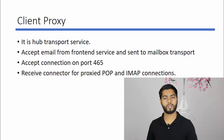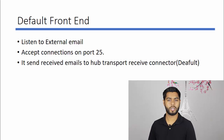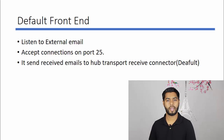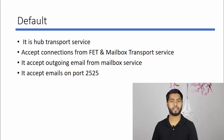Exchange never allows clients to communicate with back-end services directly. It accepts connections from clients only in the Front End Transport Service and then proxies the connection to Transport Service. The Client Proxy receive connector is a Transport Service connector that listens for proxy connections from Front End Transport Service for IMAP and POP3 clients. Next is Default Front End, which listens for external email in Front End Transport Service and forwards it to Transport Service. The Default connector receives the proxy connection from Front End Transport Service and forwards it to Mailbox Transport Service, and also accepts emails from Mailbox Transport Service to send via send connector or proxy through Front End Transport Service.